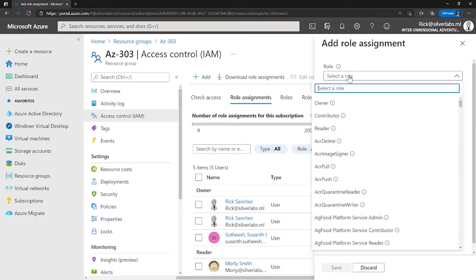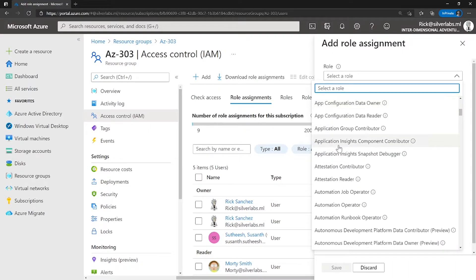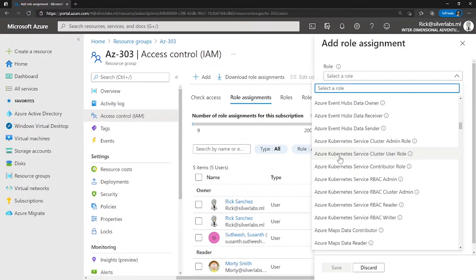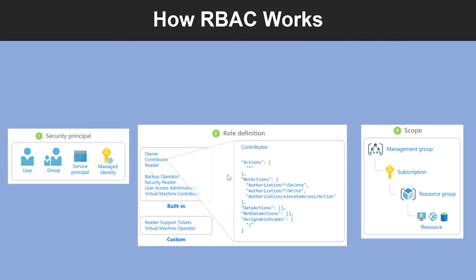Now let's have a look at how RBAC works. First, you need to understand the security principal, which is who. A security principal is a user, group, service principal, or managed identity that is requesting access to Azure resources.